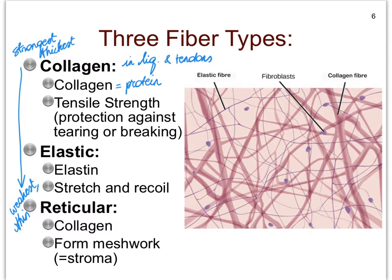Tendons connect a muscle to a bone. You wouldn't want a tendon to be able to stretch too much, because then that muscle could not move that bone very well anymore. A similar principle applies for ligaments, which interconnect bones. You wouldn't want a ligament to stretch too much, because then those bones would come apart too far and it would be rather difficult to make any kinds of decent movements. These collagen fibers therefore prevent ligaments and tendons from tearing or breaking apart — that's sort of a long explanation for what we mean by tensile strength.